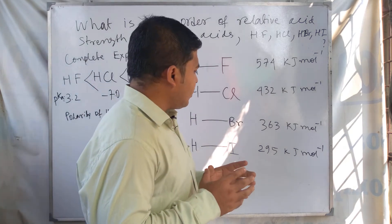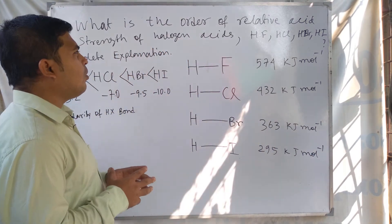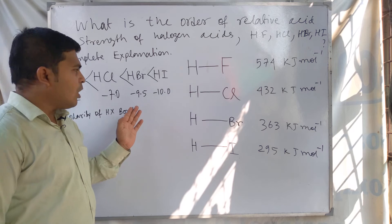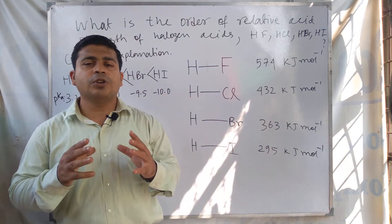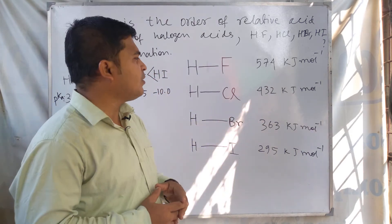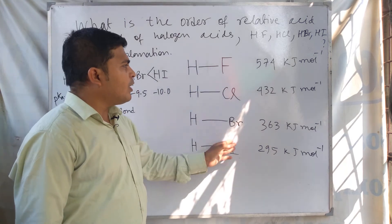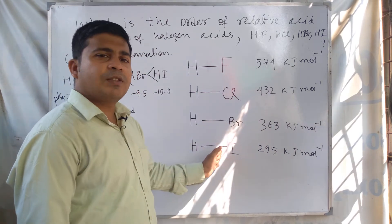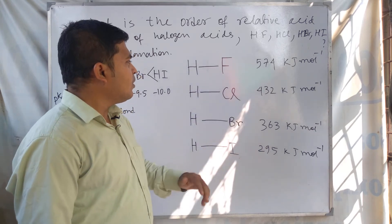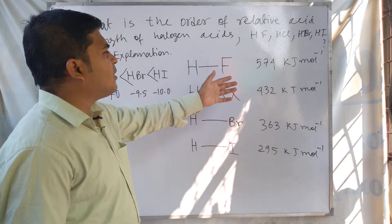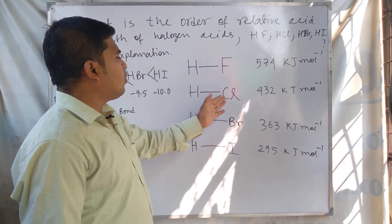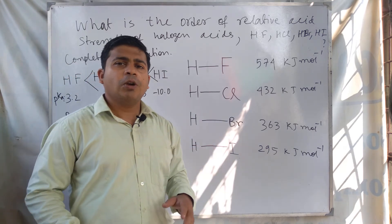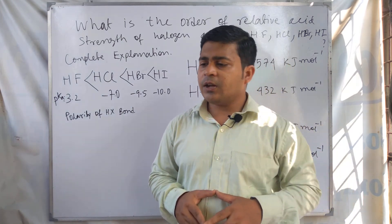This is the main reason why the order of relative acid strength of the halogen acids is HF < HCl < HBr < HI, and this order is confirmed by the pKa values — the dissociation constant or ionization constant of the acid. One may expect HF to be the most acidic and HI the least acidic, but when we consider the bond energy, we find that HI is the most acidic among these halogen acids.